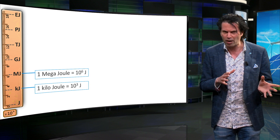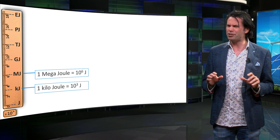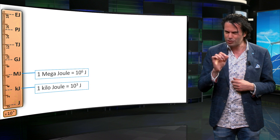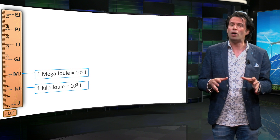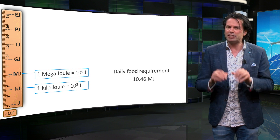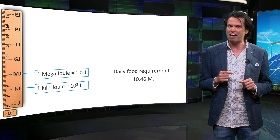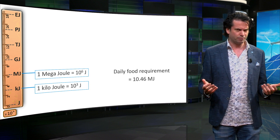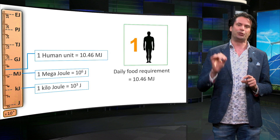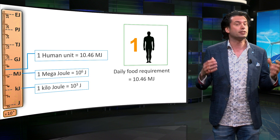This is similar to 1 kilogram being equal to 1000 grams. To put all the different orders of magnitude into a context which we can relate to, we will now define the human unit. This will help us to compare energy at a more personal level — my personal body energy consumption. The average person requires about 10.46 megajoules of energy in the form of food every day to stay healthy and function normally. We will now refer to this quantity of energy as one human unit. One human unit of energy is thus equal to 10.46 megajoules.